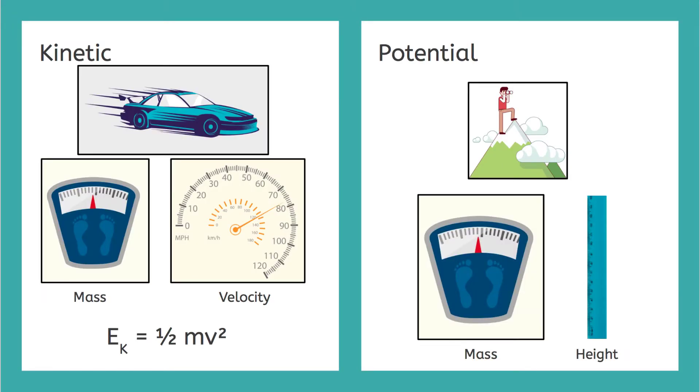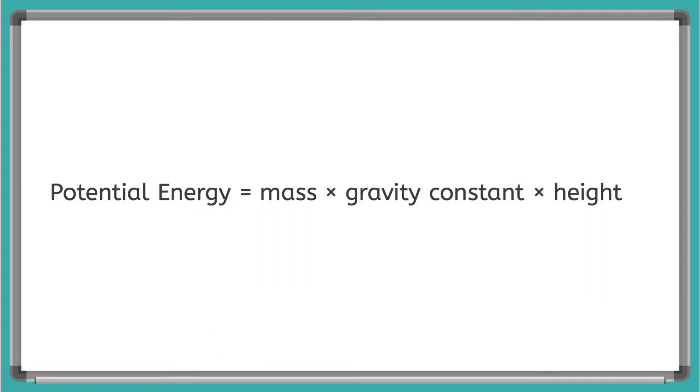Now let's focus on the equation for potential energy. It goes: potential energy equals mass of the object times the gravity constant times height.